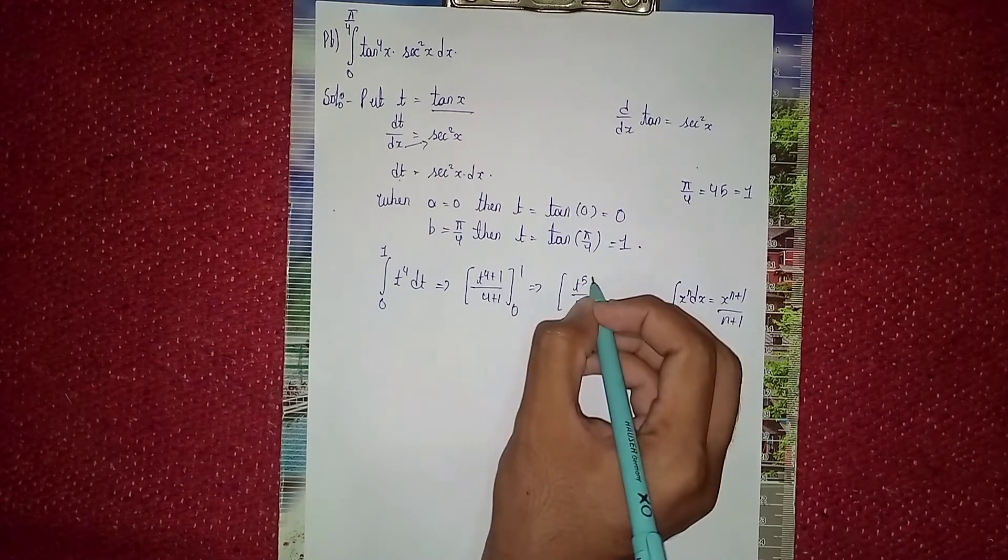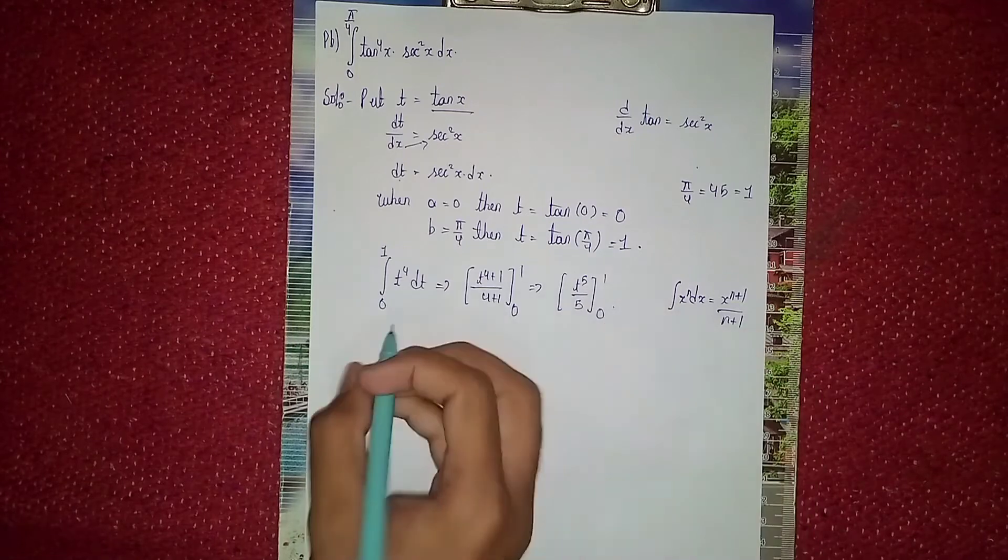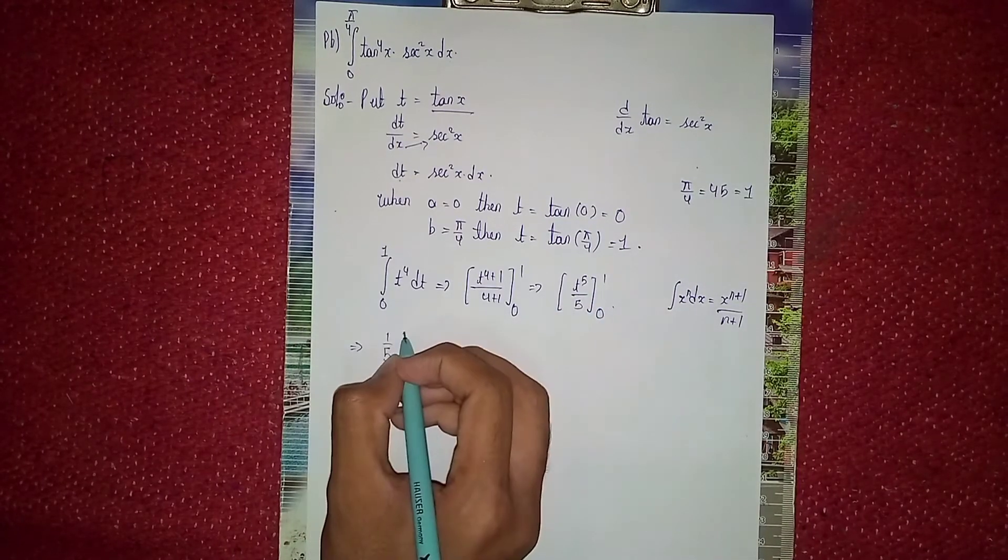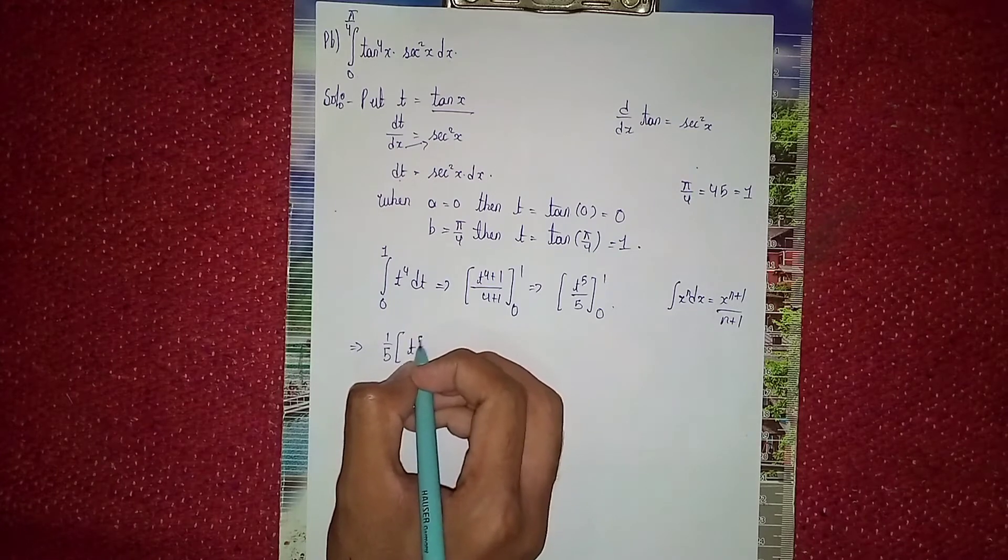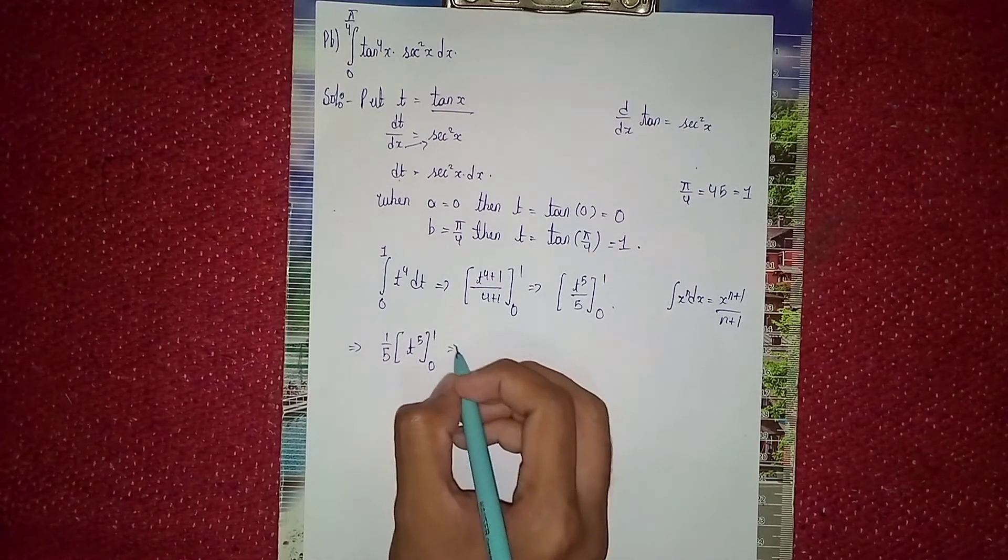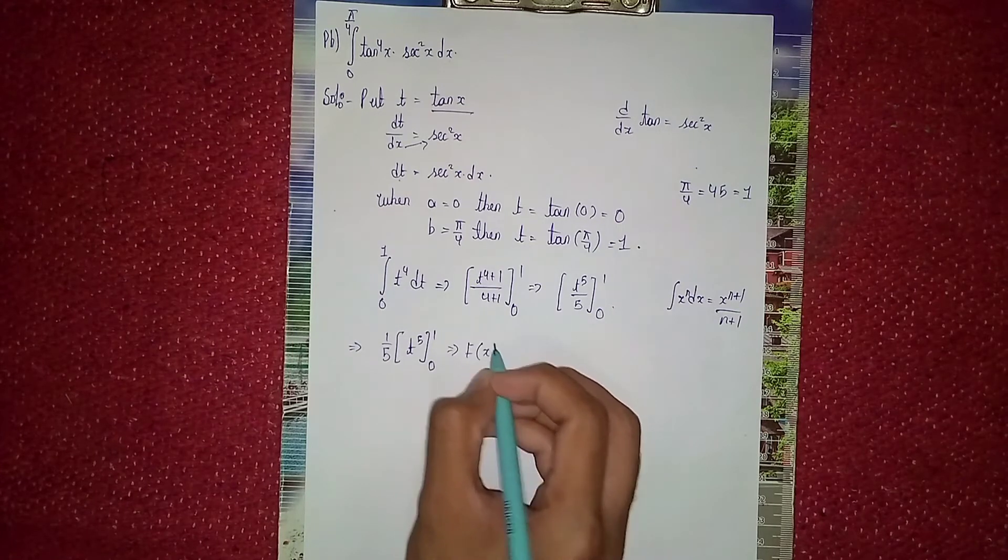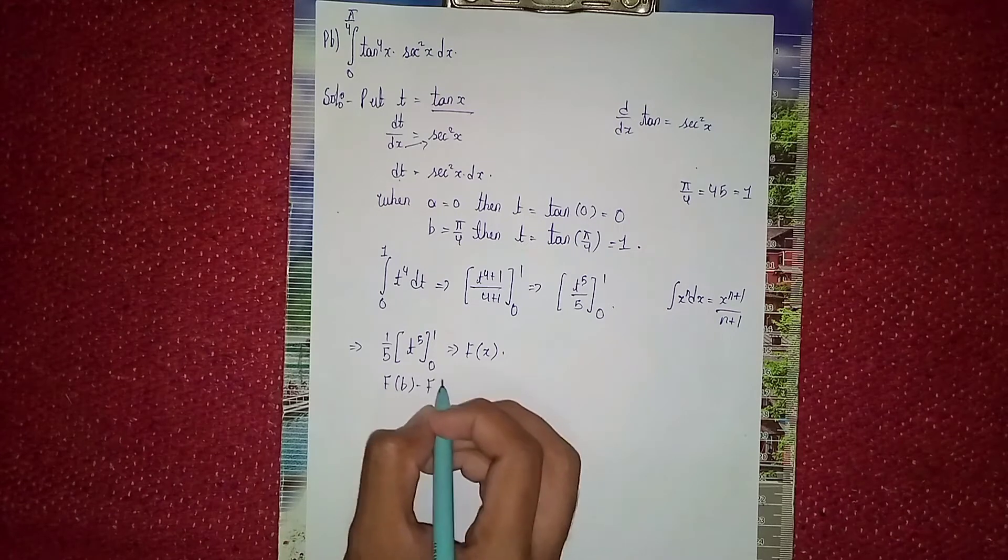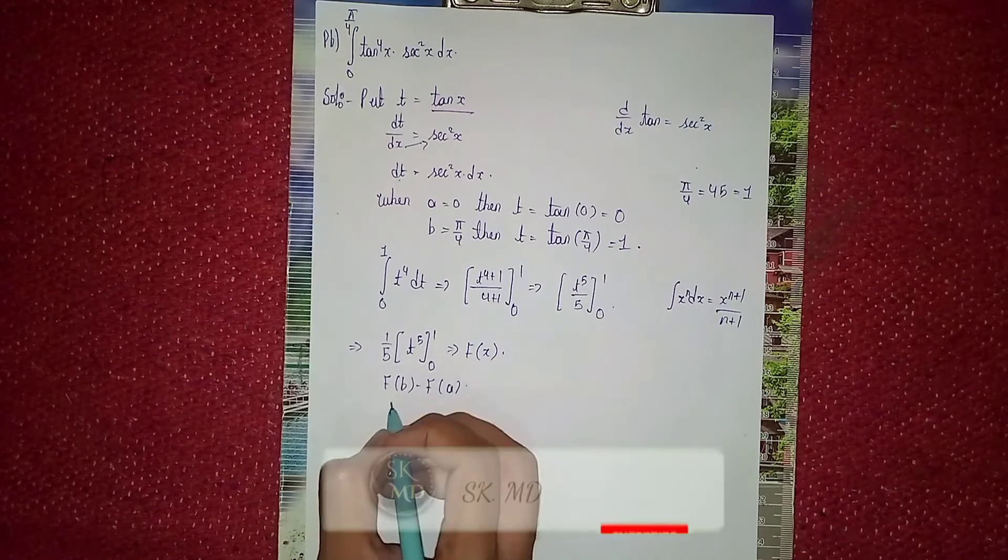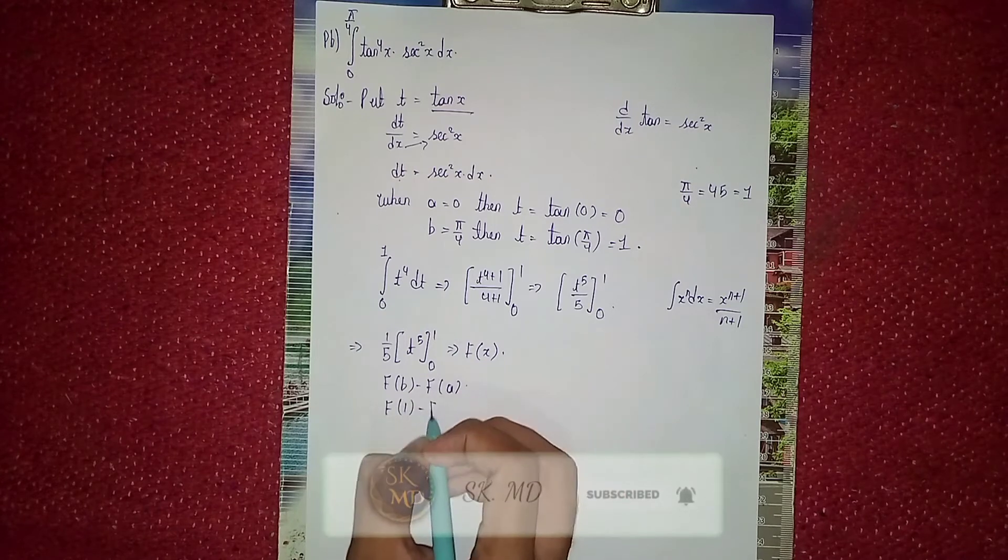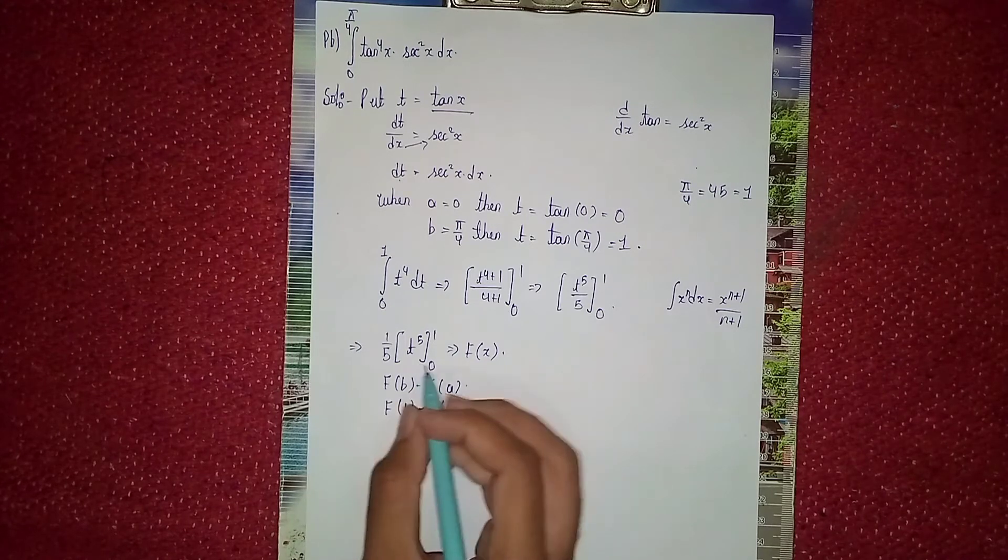Take 1/5 out, so we have (1/5) times t^5 with limits 1 and 0. Now we apply F(b) minus F(a). The upper limit b is 1, minus the lower limit a which is 0.